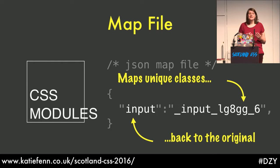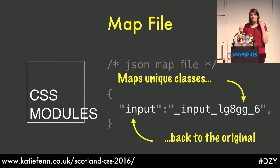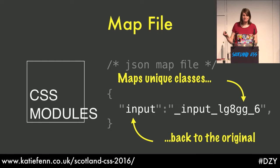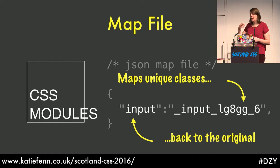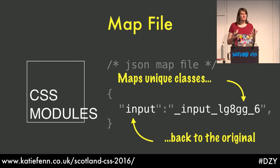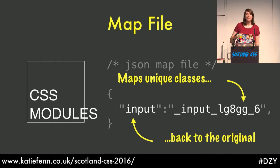This is what makes the CSS modules plugin different to Sass - it also creates a map file for you to include in your templates, and this maps unique classes back to the originals so that you can inject the unique classes into your templates. This example is in JSON format, which can be loaded in any given scripting language such as PHP, Ruby, or Python. There are also other plugins available that will export to a CommonJS format so you can use it with webpack or with Node.js.